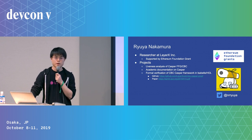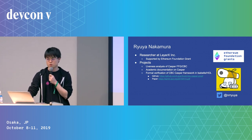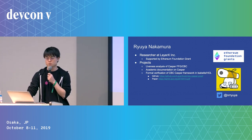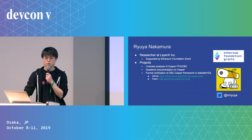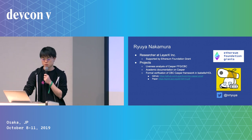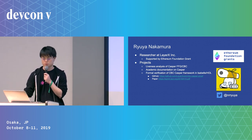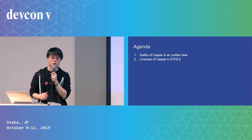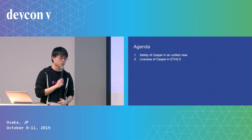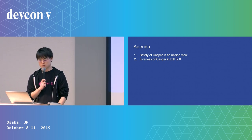I'm Ruiya from RayaX. RayaX is a blockchain startup based in Tokyo. I'm working on Casper research, supported by an Ethereum Foundation grant. Today I will talk about my research on the security of Casper.